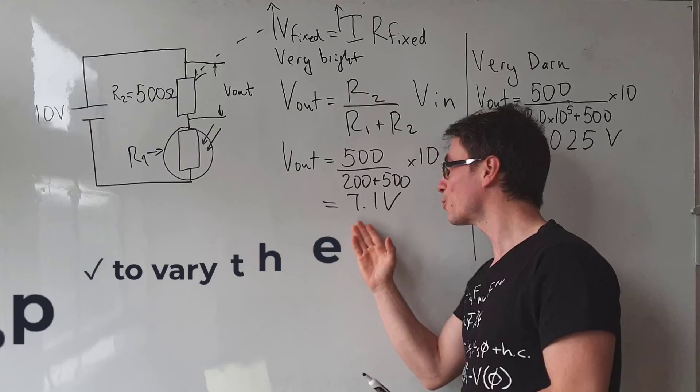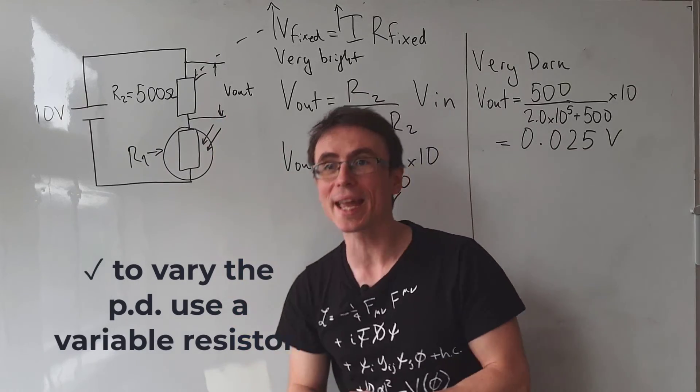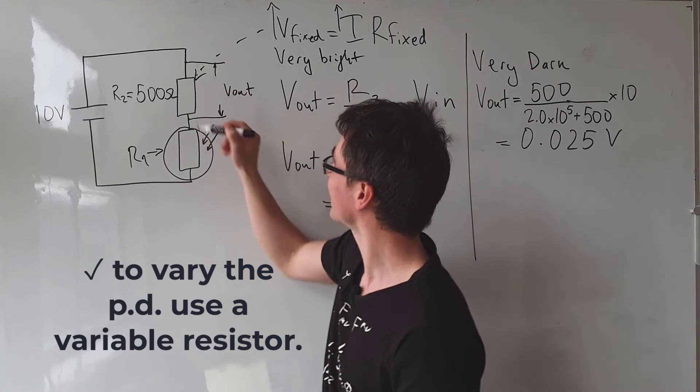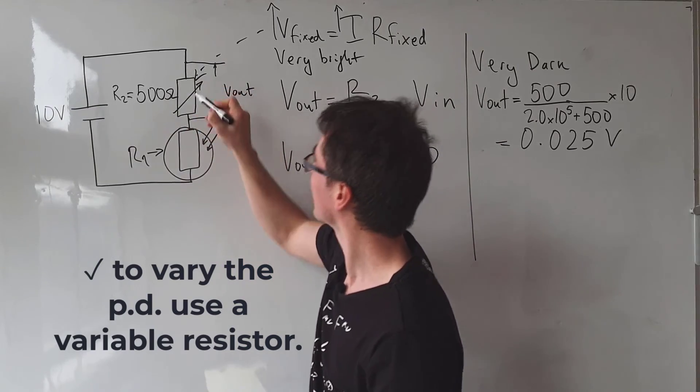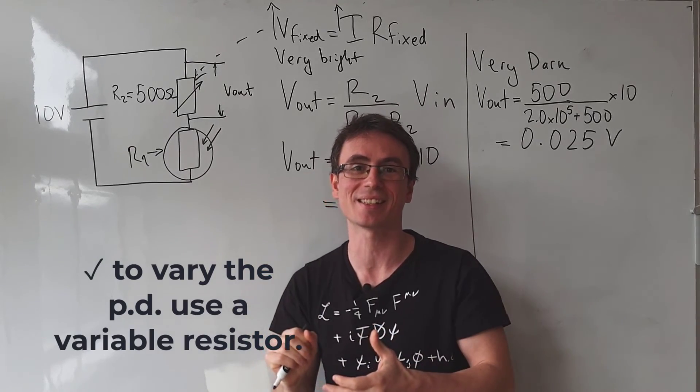If we wanted to vary the output voltage, we could use a variable resistor in the place of this fixed resistor or we could physically change the resistor sizes.